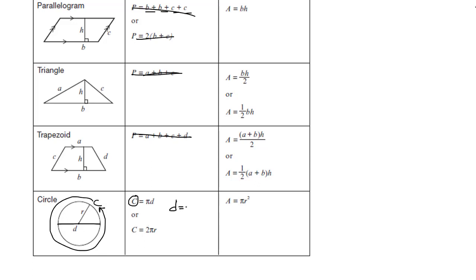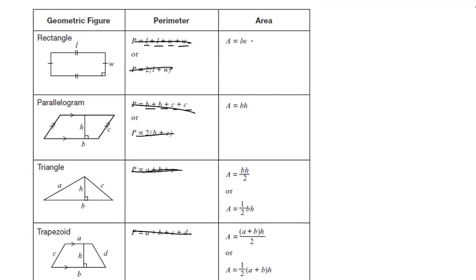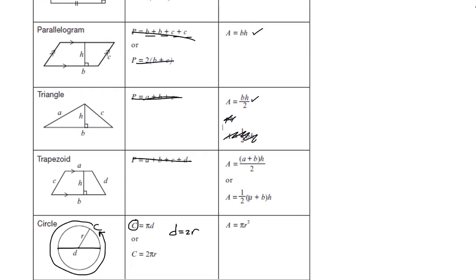The circumference is either pi times the diameter, or two times pi times the radius — they're the same formula since diameter equals two times radius. For area formulas: rectangle is length times width, parallelogram is base times height, triangle is base times height divided by two. Trapezoid is (a plus b) times h divided by two, where a is the length across the top and b is the length across the bottom. Area of a circle is pi times the radius squared.